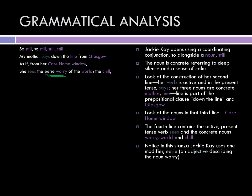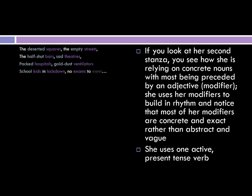In the second stanza you can see the ongoing reliance on concrete nouns: squares, streets, bars, theatres, hospitals, ventilators, kids, lockdown, exams — and one verb. Again, her verb is active and in present tense.